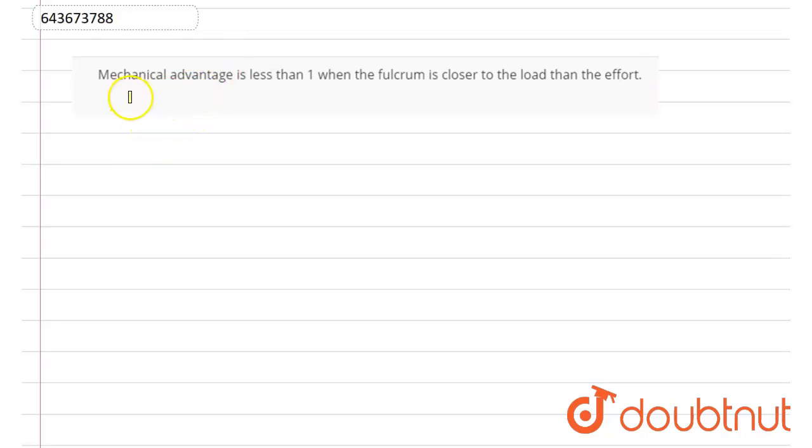The statement reads as follows: Mechanical advantage is less than one when the fulcrum is closer to the load than the effort. So let us see what they're trying to say.